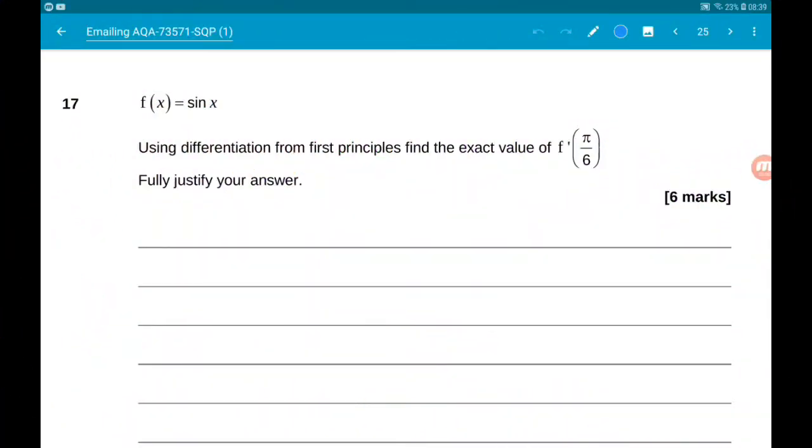Okay, question 17, the grand finale. We have differentiation by first principles of a trigonometric function. So f of x is sine of x. Using differentiation by first principles, we want to find the exact value of f dash pi by six. So first off...